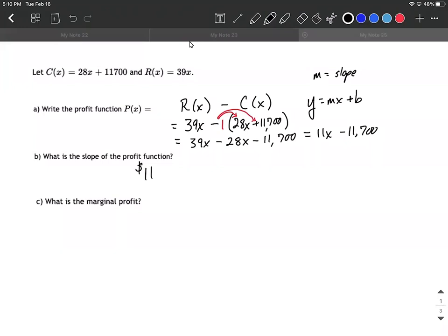So what's the marginal profit? Well, the marginal profit is going to be the same thing as the slope of the tangent line to this curve. And the slope of this curve is $11, so the marginal profit is also going to be $11.